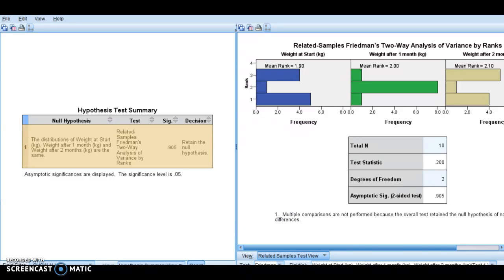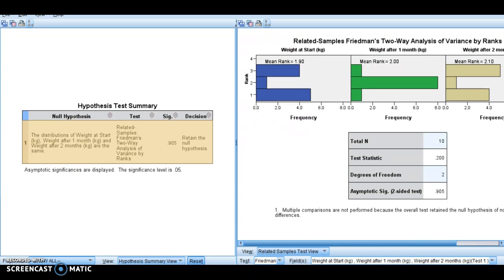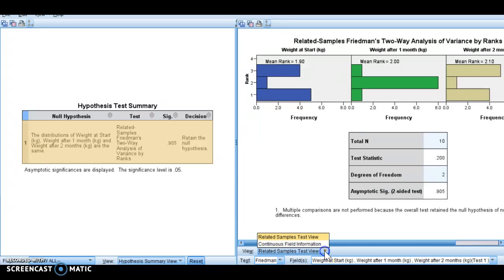So if we had the option of, if that was significant, you could come down here and you could click on this down arrow, and you could click on homogenous subsets, which would do the same thing that we did in the previous module.